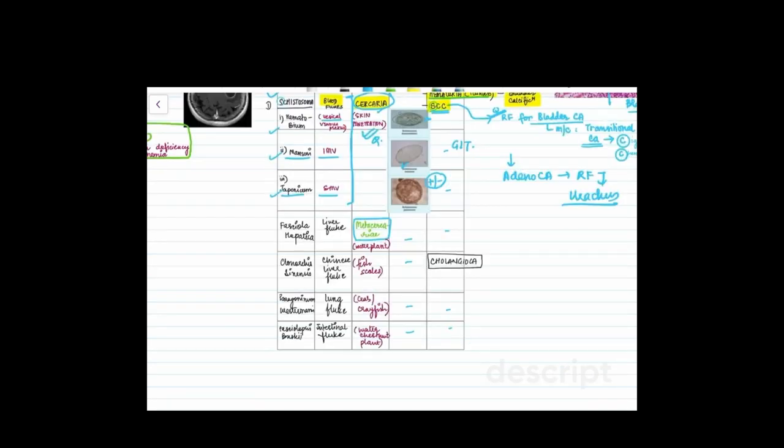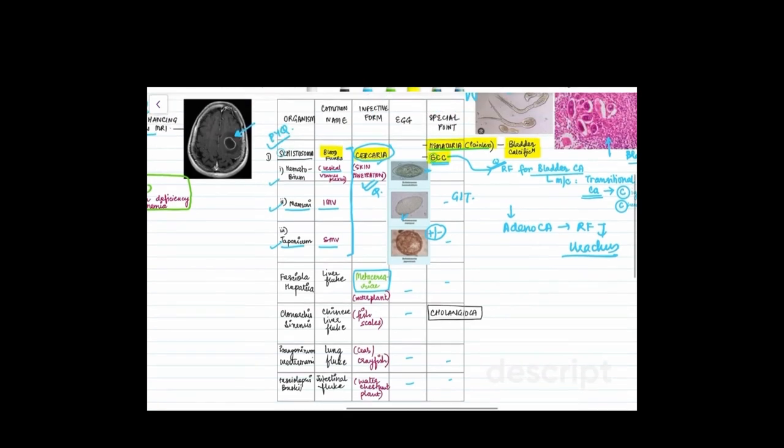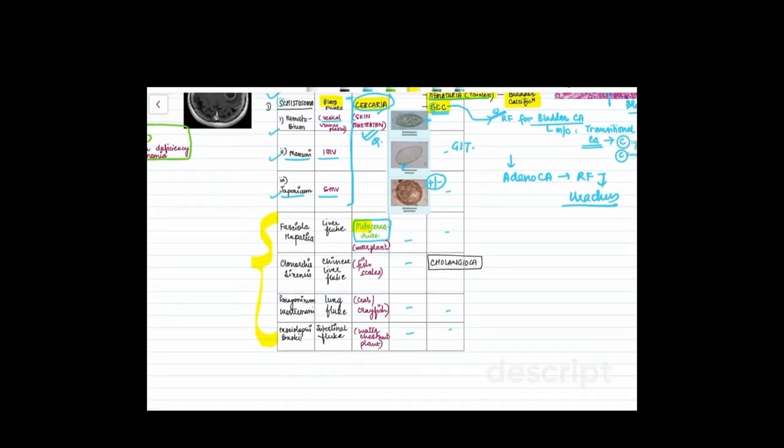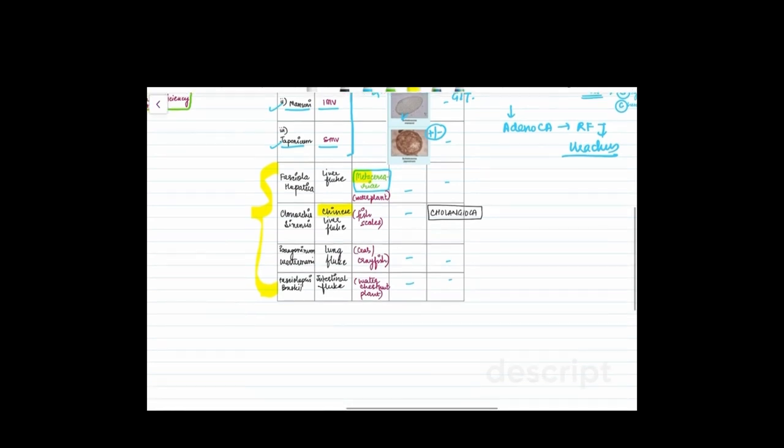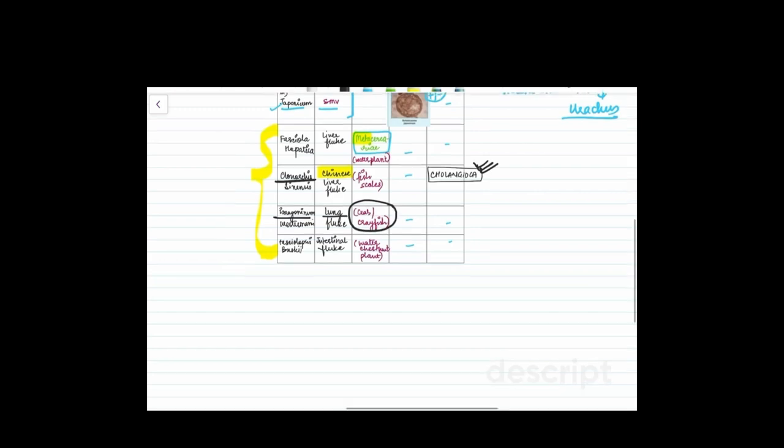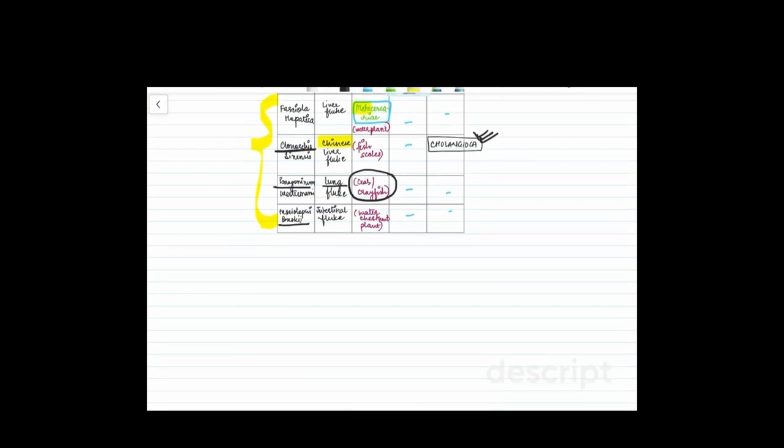For the other trematodes, you're usually only asked the common names and the form. Just remember roughly for the infective form: for schistosoma it's cercaria and all the other trematodes, the infective form is metacercaria. This is the only important part that you need to know. So Fasciola hepatica is the liver fluke. Clonorchis sinensis is the Chinese liver fluke and I've given in brackets the source of infection. The metacercaria will be ingested through the water plant that you're eating. That will be the intermediate host. Clonorchis sinensis, remember it's a risk factor for cholangiocarcinoma. Paragonimus westermani causes the lung fluke and you get it through ingestion of the crab or the crayfish which is the intermediate host. Fasciolopsis buski is the intestinal fluke and you get it through water chestnut. That is all you need to know.